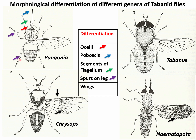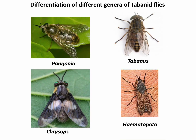The spur on the leg is larger in Pangonia; in Chrysops and Tabanus the spur is smaller; and in Haematopota there is no spur on the leg. Remember that the spur is located behind the tibia of each leg. Regarding wings, a dark band is present in Chrysops and a mottled wing pattern is seen in Haematopota.